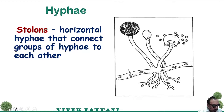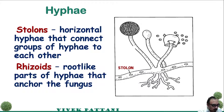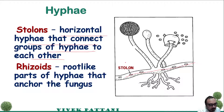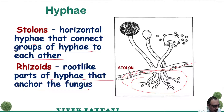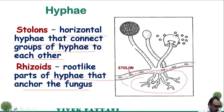Stolons are horizontal hyphae that connect groups of hyphae to each other. Rhizoids are the root-like parts of hyphae that anchor the fungus. The function of rhizoids is to attach to a solid substratum as well as absorb food from the environment.